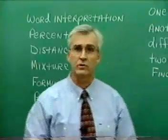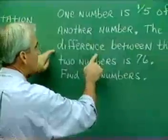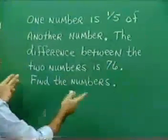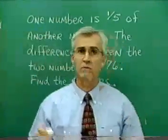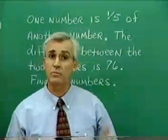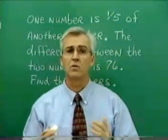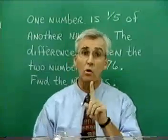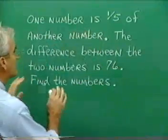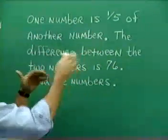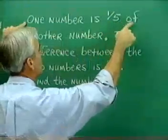Let's begin with word interpretation. Here's one such problem. One number is one-fifth of another number. The difference between the two numbers is 76. Find the numbers. Now, at first glance, you might think, well, we're looking for two numbers, so let's let x be one number and y the other. And that is a technique that would be workable here. But we haven't talked about solving equations using two variables. So let's try to represent the two numbers using one variable.